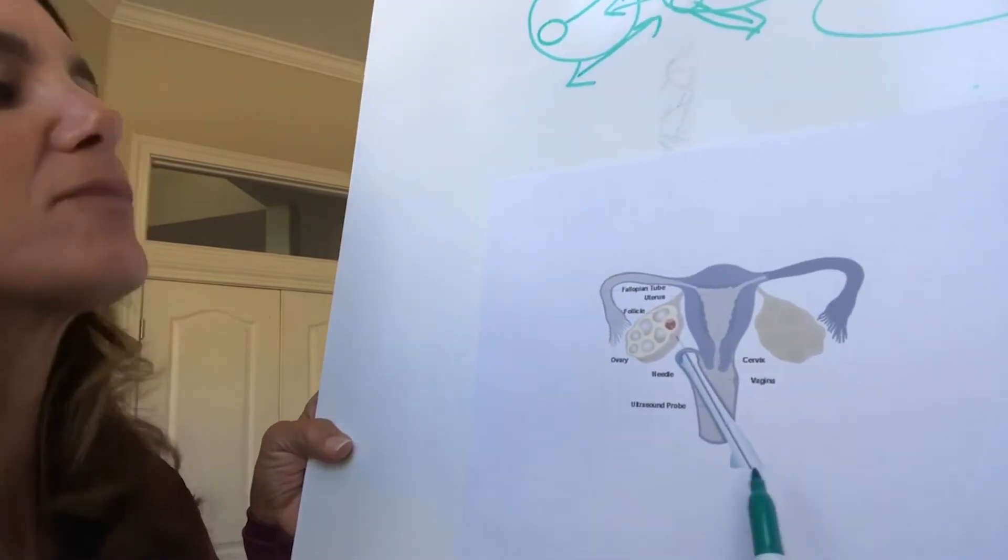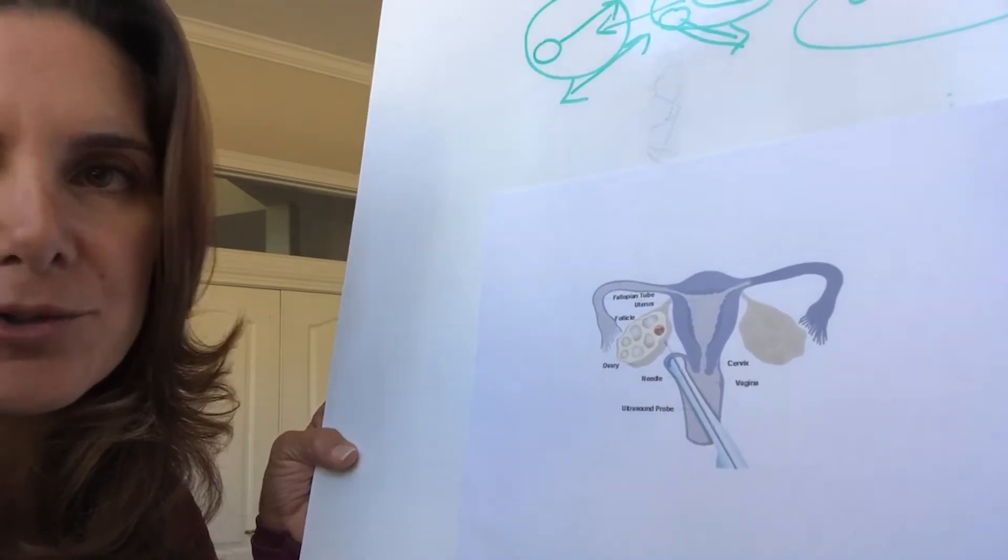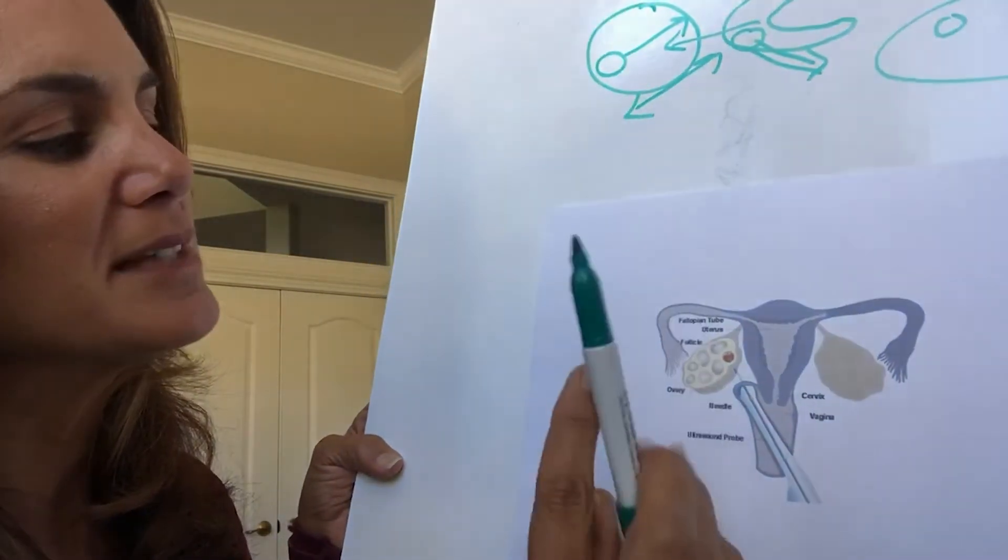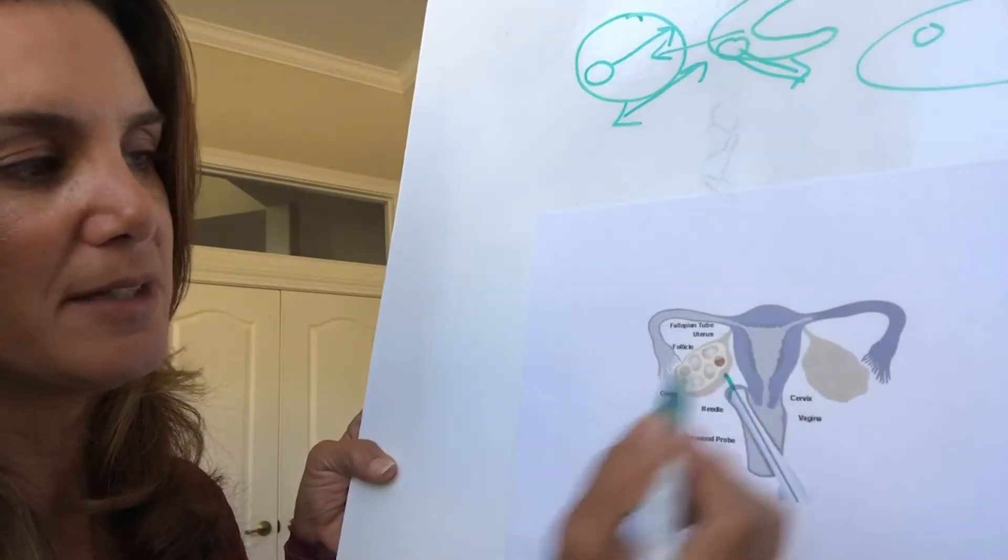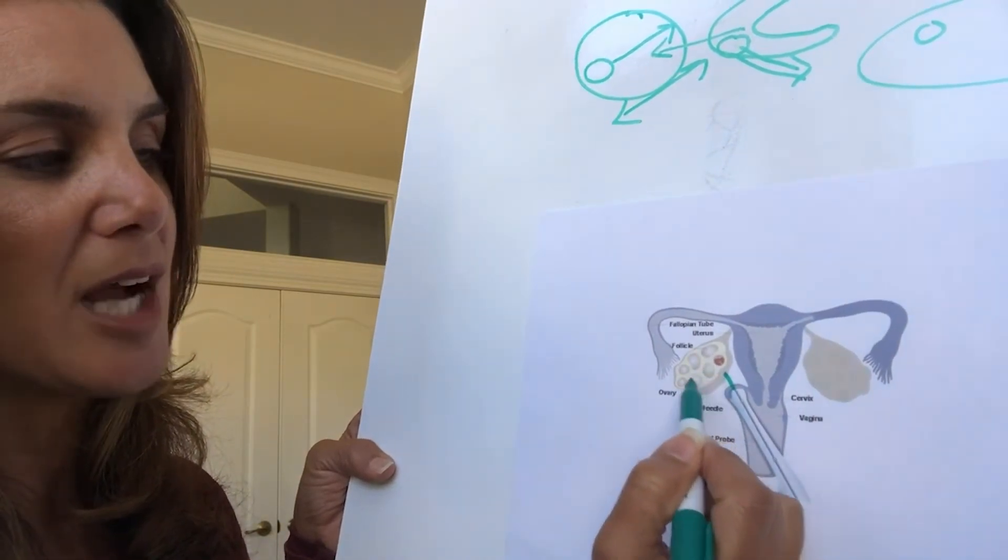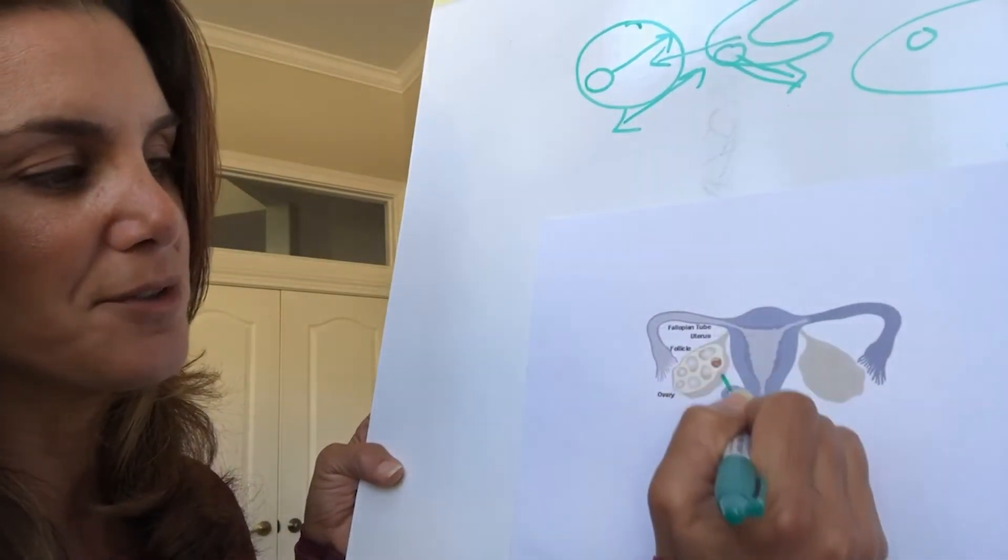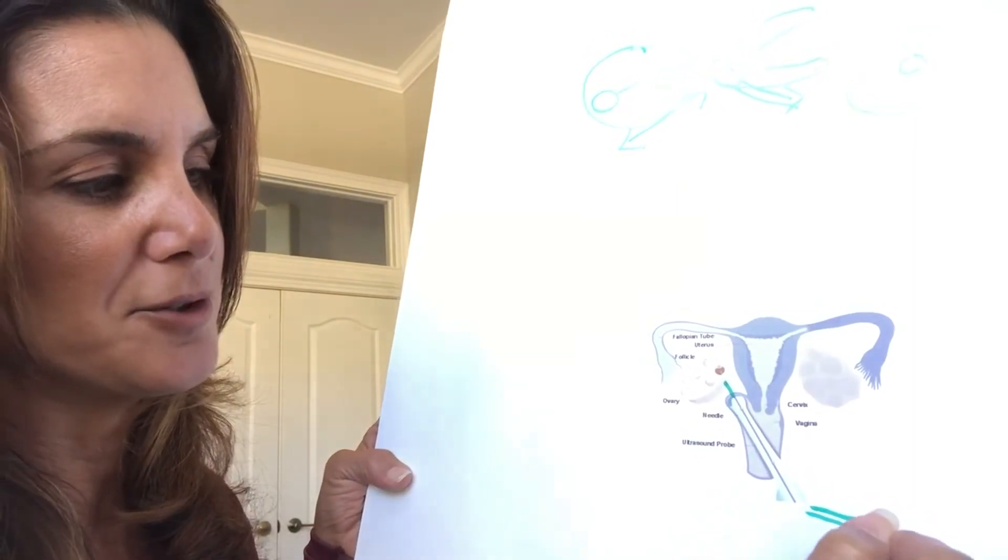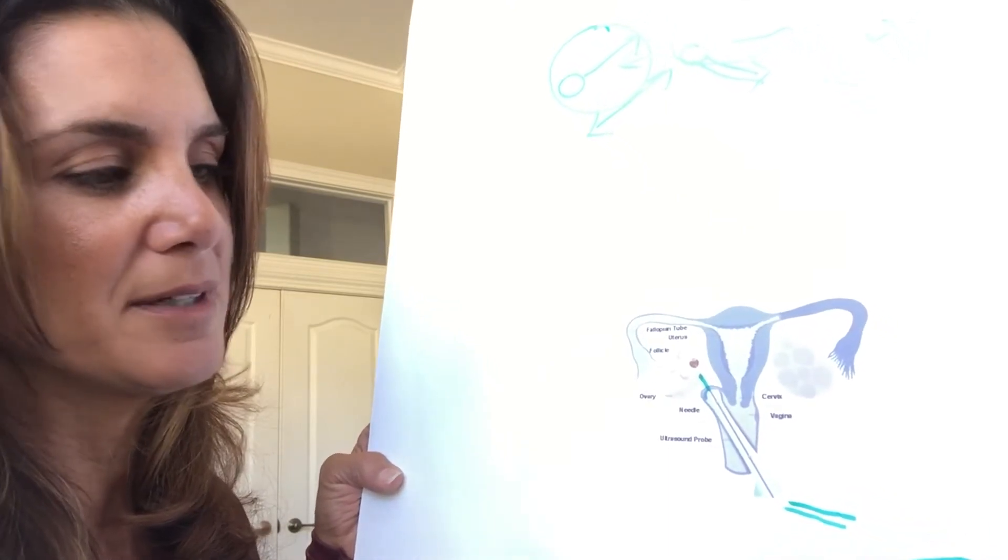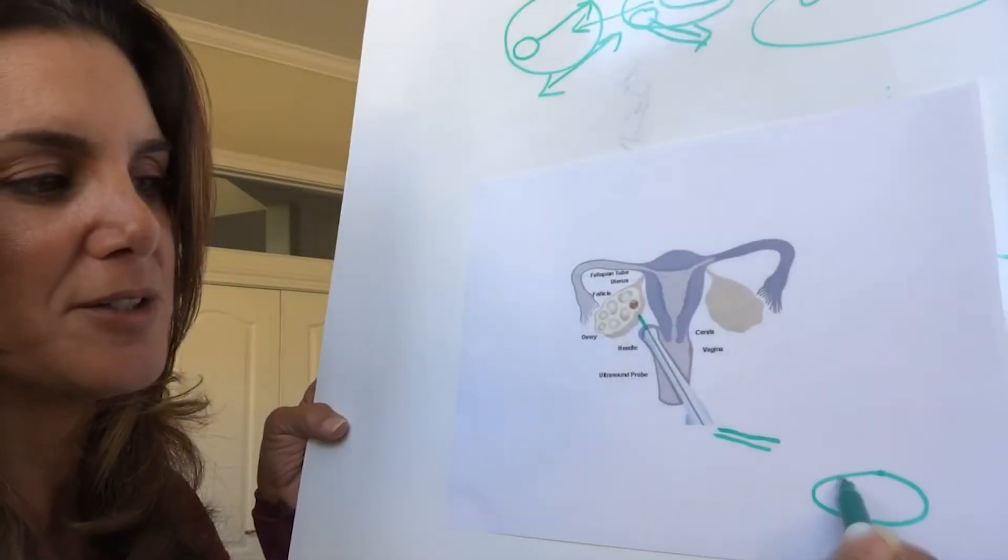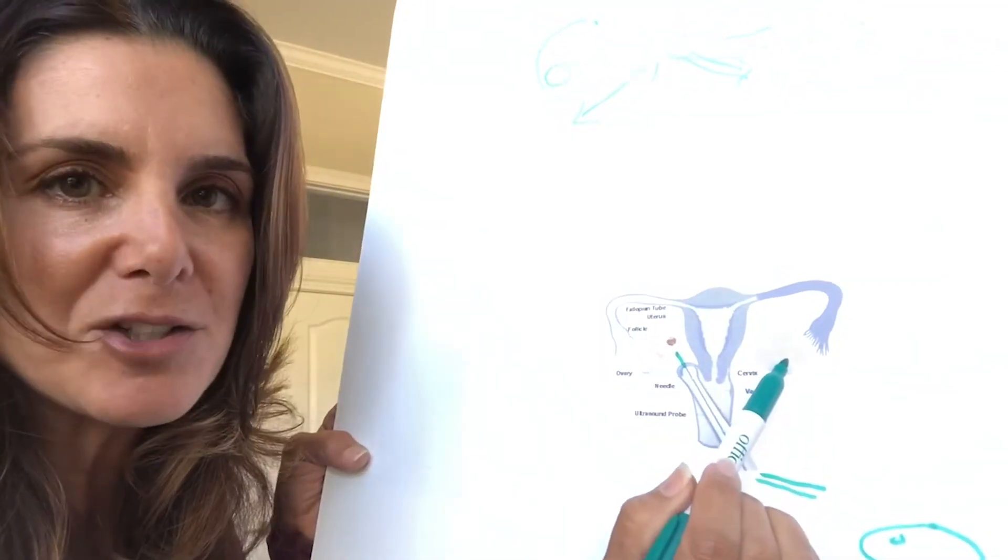What happens is the vaginal ultrasound probe goes in through the vagina, just like it does when you have vaginal ultrasounds done. There's a needle attached to the end of it which goes through the vaginal walls. You can see right here the vaginal wall, here's the needle, and it goes into the ovary. It goes in a couple times to puncture follicles. As this follicle is punctured, the egg goes out through a tube, then it's collected into a syringe, which is taken to the embryology lab where it's put into that petri dish. We go on this side and puncture every single follicle that we can, and then we go on this side and puncture every single follicle that we can on this side.